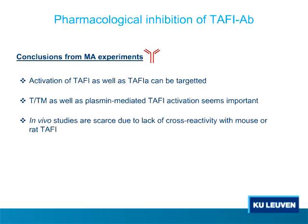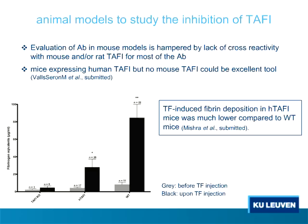In vivo studies are scarce because only one antibody cross-reacts with mouse and rat TAFI. Therefore, we thought it would be interesting to use these antibodies in mice that express human TAFI, available through the laboratory of Joost Meyers, who made mice that do not contain mouse TAFI but do express human TAFI. However, upon injection of tissue factor, fibrin deposition in mice expressing human TAFI was much less compared to wild-type mice, with large variability between animals, leading us to conclude not to use these mice for comparing antibody effects.